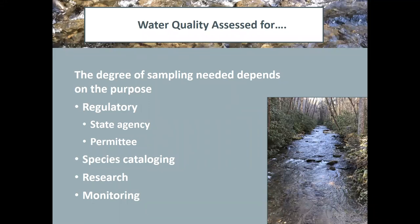The degree of sampling needed depends on the purpose of a program. For example, a state environmental agency does water quality monitoring for submission to the EPA. That's a very specific sampling protocol with methods that are consistent with what the EPA requires. And then a permittee will have a permit for an action, and as part of their permit, they also have to do water quality assessments that have to be consistent with that state environmental agency.